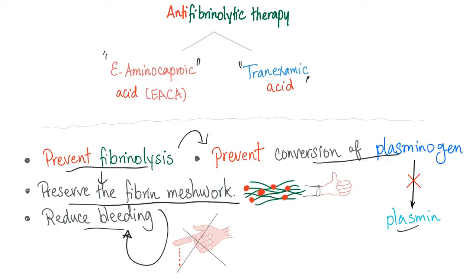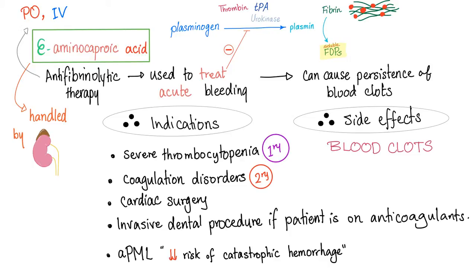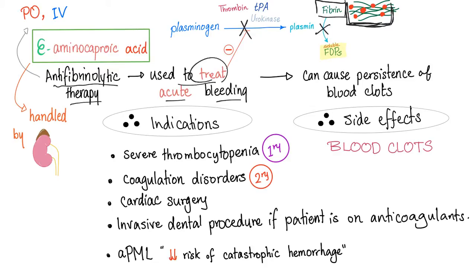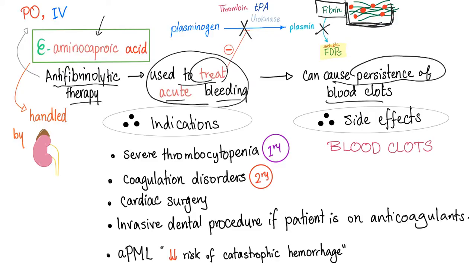As a side effect, if you reduce bleeding, you will cause thrombosis. Aminocaproic acid prevents the conversion of plasminogen into plasmin, therefore preserves the fibrin and inhibits its degradation — it is an anti-fibrinolytic therapy used to treat acute bleeding by preserving the fibrin meshwork. However, it can cause persistence of blood clots. If you preserve the clot and prevent bleeding, you will cause clotting and thrombosis, because actions have consequences.